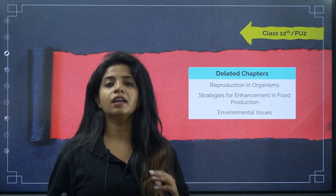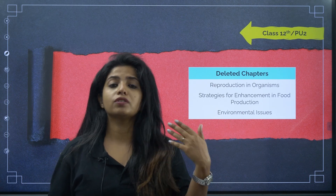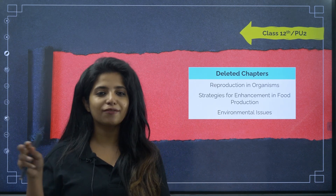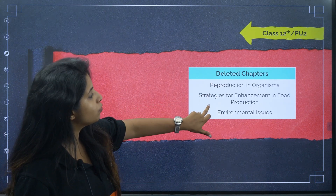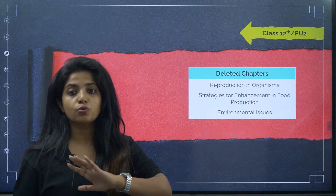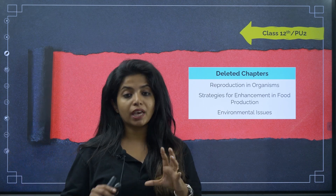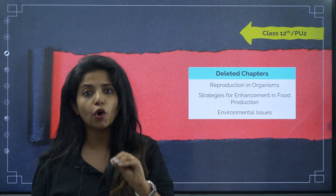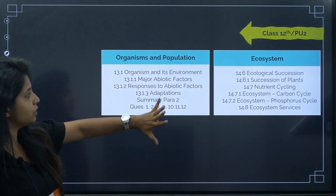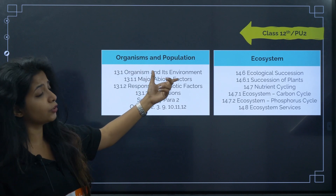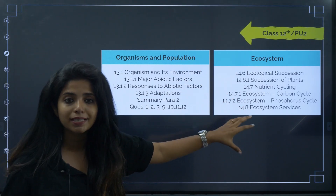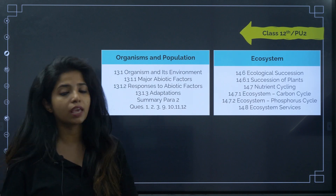Borrowing books is a great thing — you get additional notes — but you need to know what is deleted and what is not. Be careful: reproduction in organisms is not there, strategies for enhancement in food production is not there, and environmental issues is also not there. In some chapters, not the entire chapter is deleted but certain topics are. For example, in organisms and population, topics like section 13.1 'organism and its environment' are deleted, and the same goes for ecosystem topics.